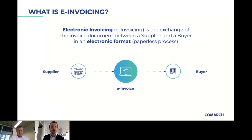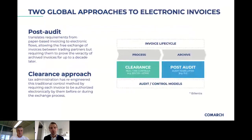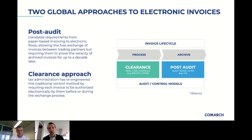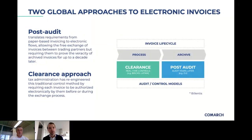In general, there are two global approaches to electronic invoices: the post-audit approach and the clearance approach. The post-audit model, common in the US, Canada, and the European Union, requires you to store your invoices for a certain period. The clearance approach — the more interesting one driving more e-invoicing implementations worldwide — makes it mandatory to send invoices to the tax authority first. They approve them and, such as in Italy, automatically send the invoice to your buyer. You just send it to the tax authority and they forward it to your buyer.